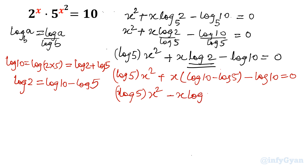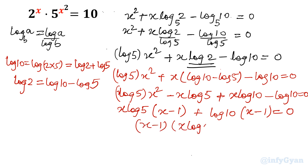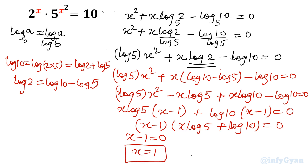So x log 5 is common in the first two terms. Taking x log 5 common gives x minus 1, and taking log 10 common from the remaining terms also gives x minus 1. So we get: (x minus 1)(x log 5 plus log 10) equals 0. Setting x minus 1 equal to 0, x equals 1, which is directly visible — if we put x equals 1 into the original equation, 2 times 5 equals 10, which is correct.